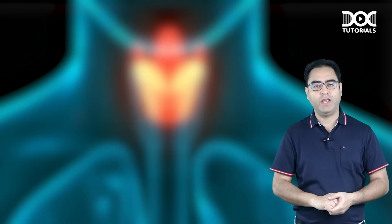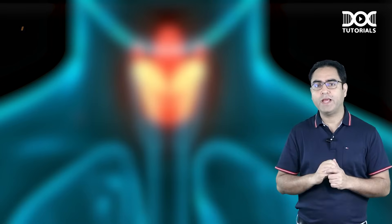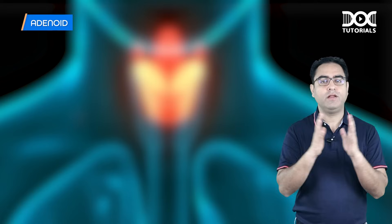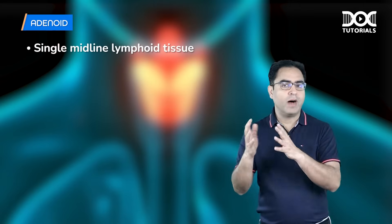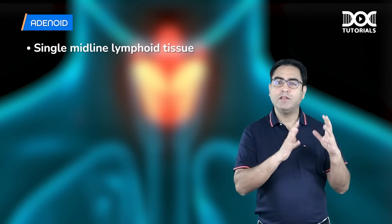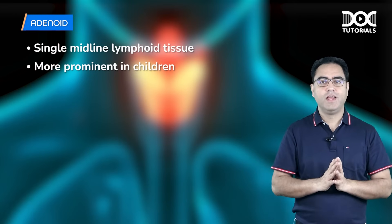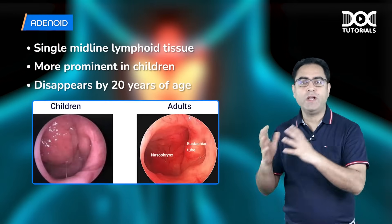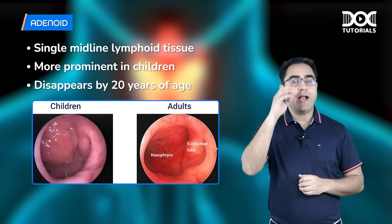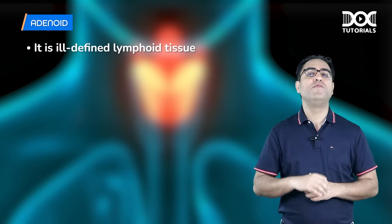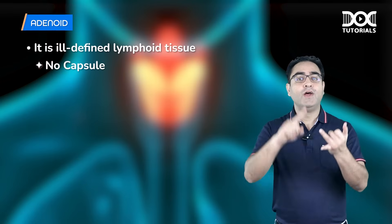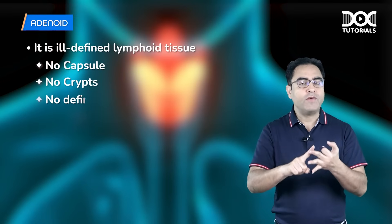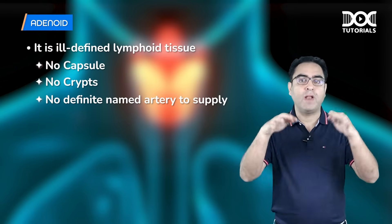The first topic is adenoid. Adenoid is a lymphoid tissue — a single midline mass more prominent in children. It disappears by 20 years of age. Adenoid is an ill-defined lymphoid tissue, meaning it has no capsule, no crypts, and no definite named artery.